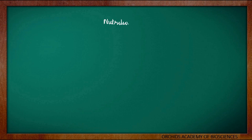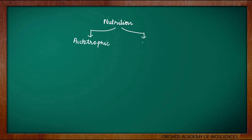Now, coming to the concept of nutrition. As discussed earlier, nutrition is the process of utilizing or obtaining the nutrients which come from food. Nutrition can be broadly classified into two types. First one is known as autotrophic nutrition, and the second one is called as heterotrophic nutrition.